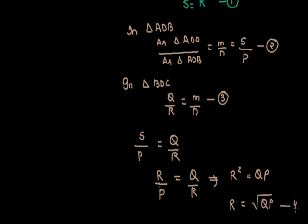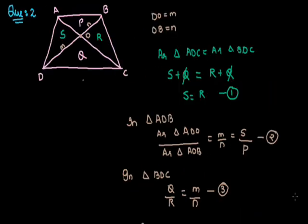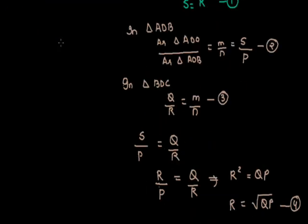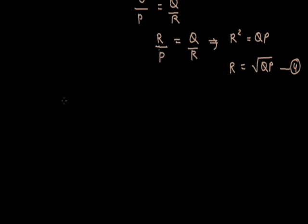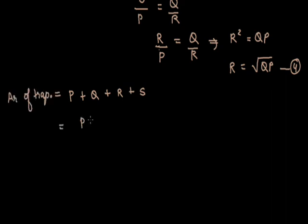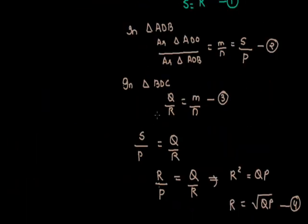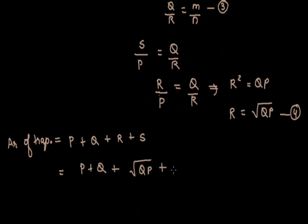Now we know that the area of the trapezium is formed by adding the areas P, Q, R, and S. So area of trapezium = P + Q + R + S. From equation 4, R = √(QP), and from equation 1, S = R = √(QP). Substituting, we get P + Q + 2√(QP).